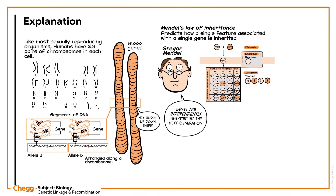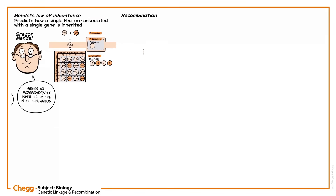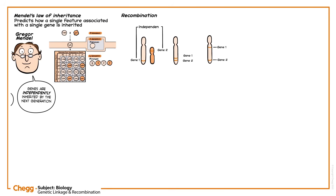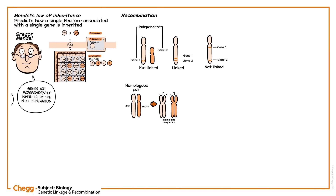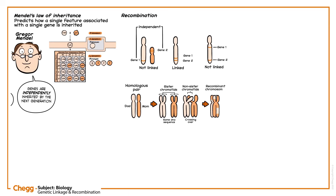Where the genes are placed on the chromosome is important. When genes are on different sets of chromosomes, they are independent and do not influence one another. But in the case of homologous chromosomes, they are likely to be exchanged between non-sister chromatids during crossing over, resulting in recombinant chromosomes.